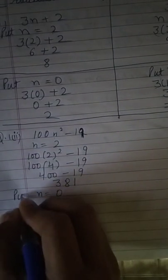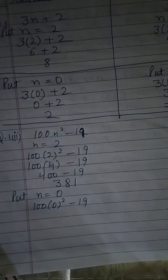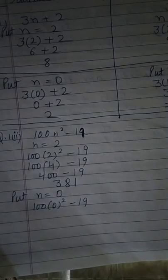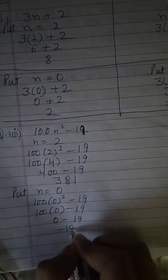Next value is 0. Here I replace n's value with zero. Zero multiply zero equals zero. Zero times 100 equals zero. And I am getting minus 19 as my answer.